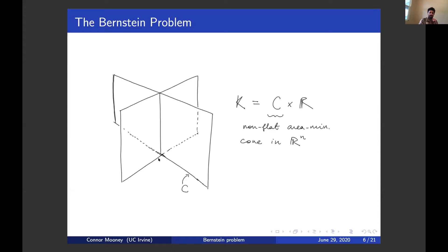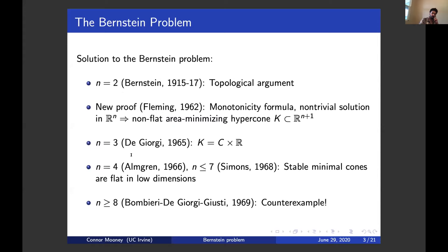The Bernstein theorem was extended up to dimension seven by Almgren and Simons in 1966 and 1968. They showed that stable minimal cones have to be flat in low dimensions — they didn't need the full information that the cone is area minimizing. If it's just minimizing under tiny perturbations, it has to be a hyperplane in low dimensions. This comes from a stability inequality, plugging in some very clever test functions.